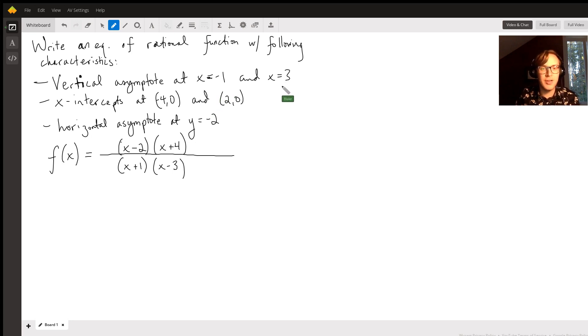Finally, we need a horizontal asymptote at y equals negative 2. Now notice here that the top and the bottom of what we have so far, the top and the bottom are both quadratic polynomials, right?